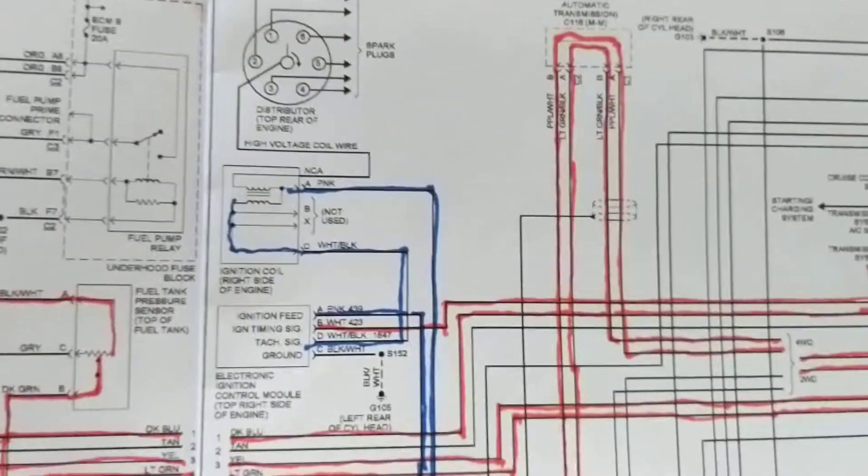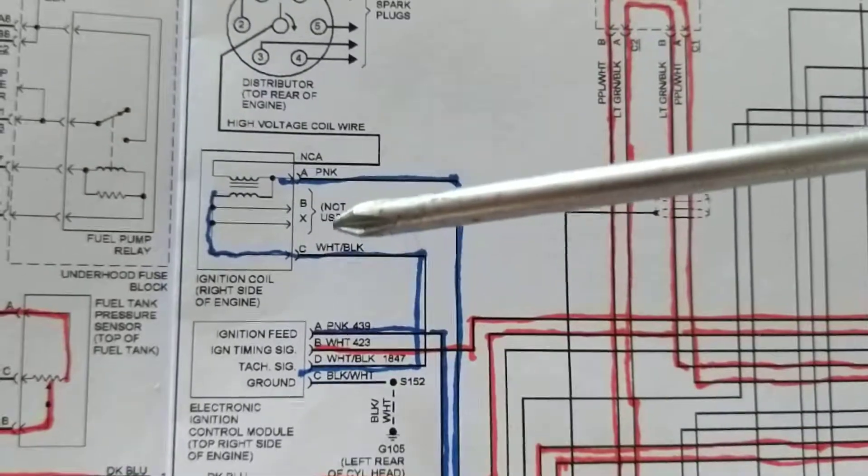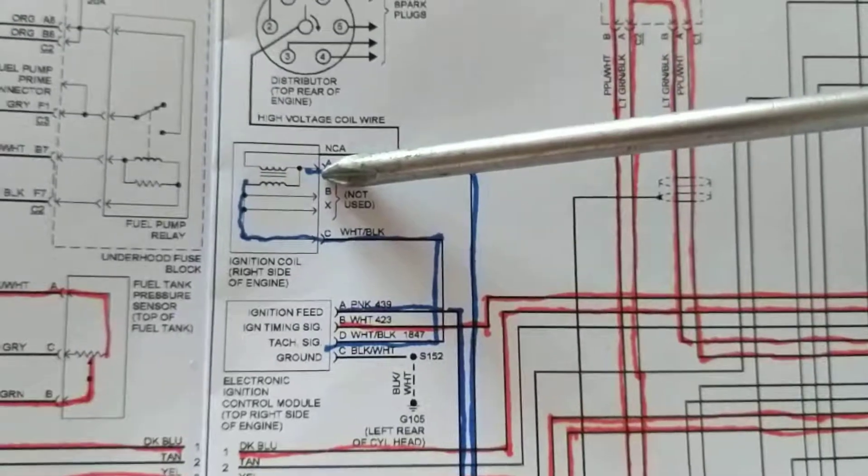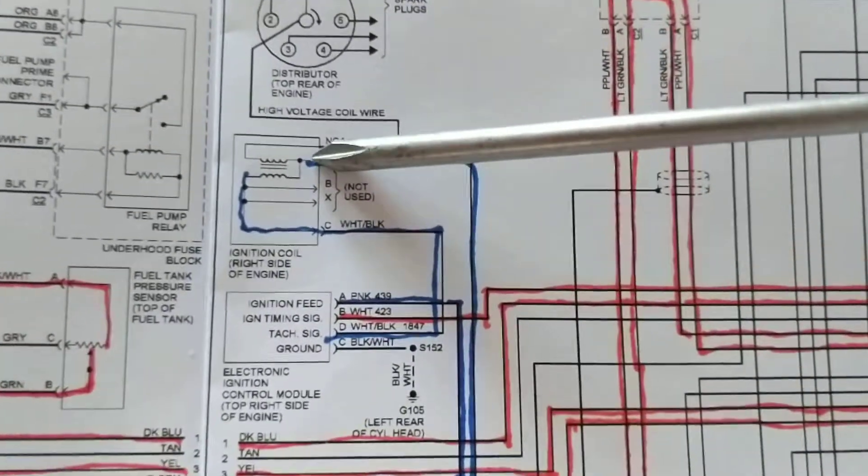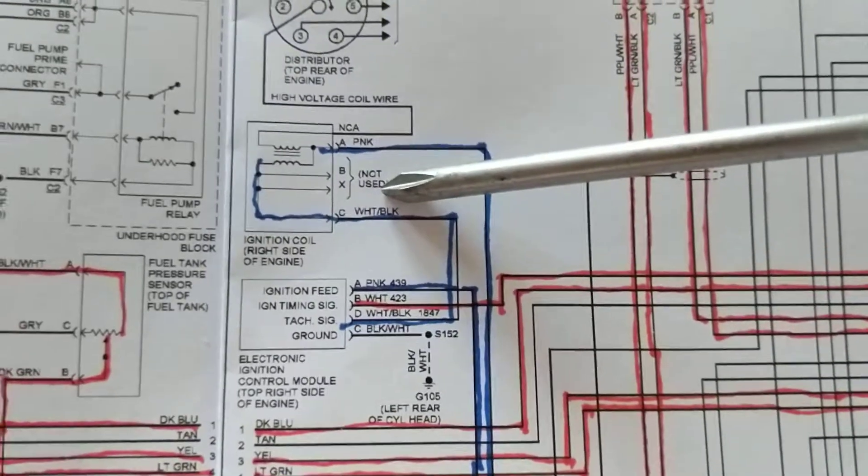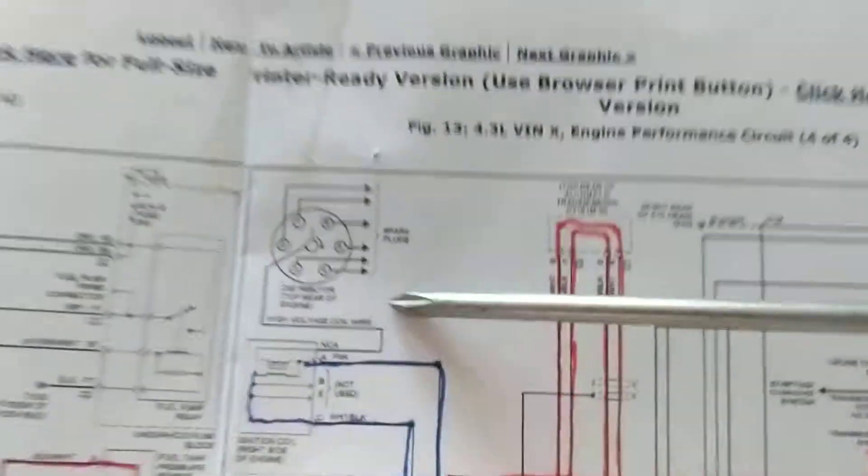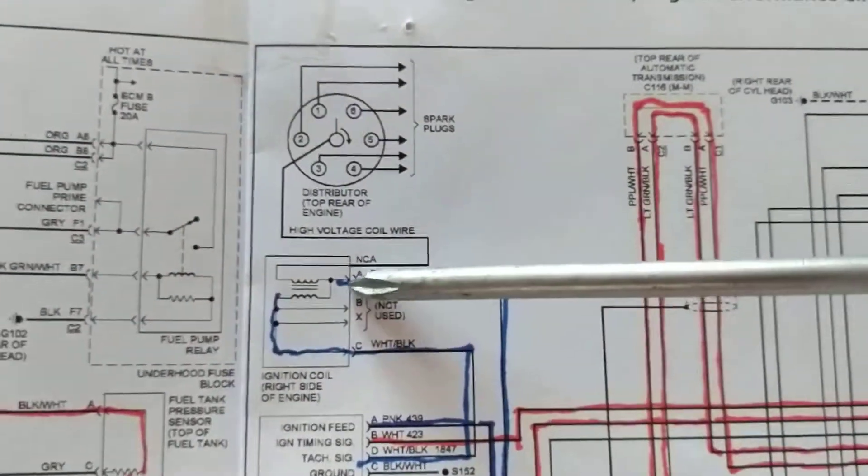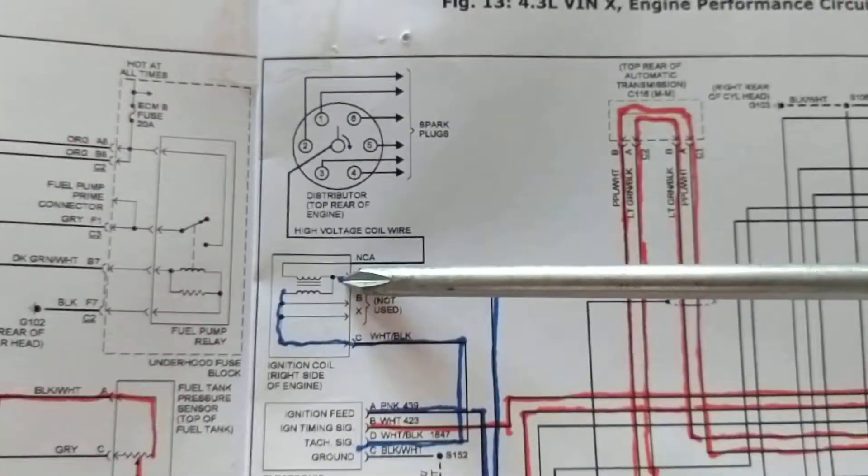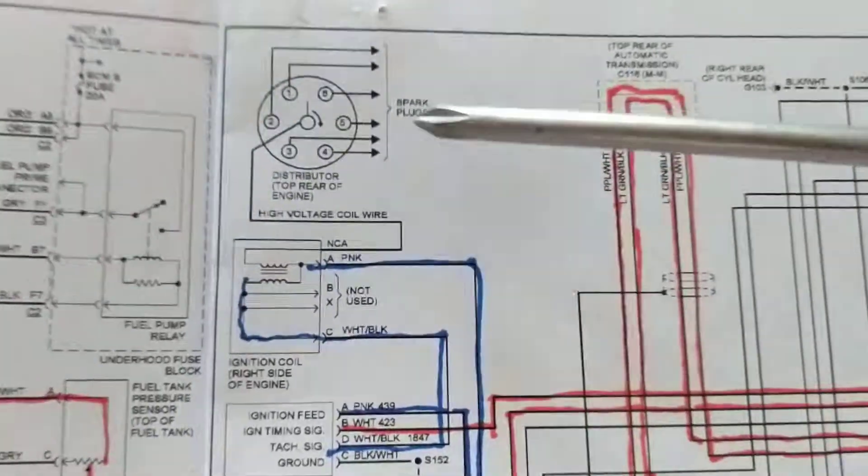There are different electronic fuel injection systems. Sometimes they have three coils, coil packs, and six spark plugs. Sometimes they have eight ignition coils, like the Crown Vic - they have eight of them, coil on plug. Sometimes they have one ignition coil that's common to all.